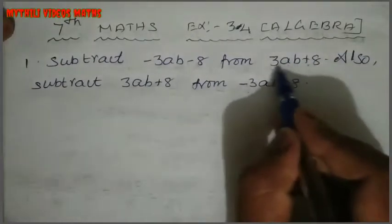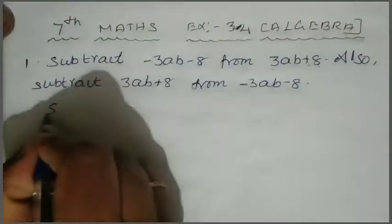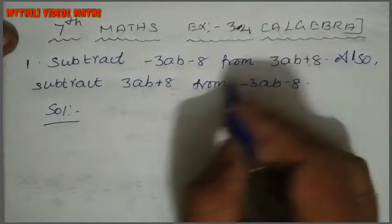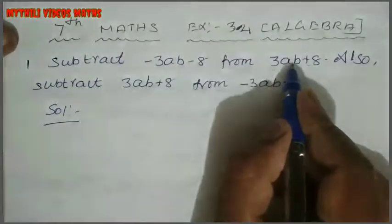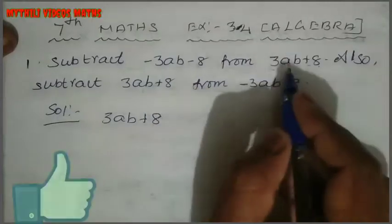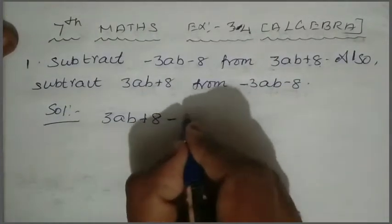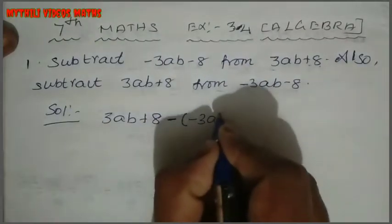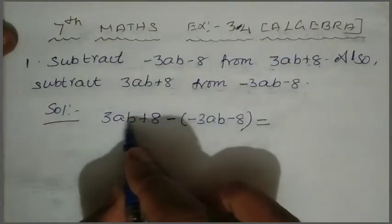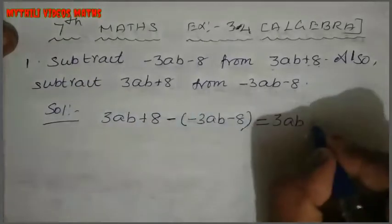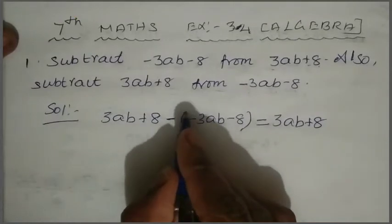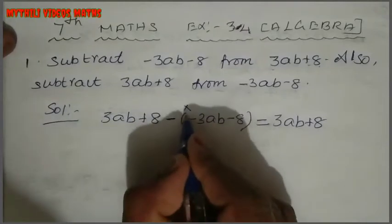So first we have to write the solution. Just write 'subtract.' In the algebraic expression, we write the first expression: 3AB plus 8. Then below it, we subtract minus 3AB minus 8. The bracket here acts as a multiplication symbol, so the first term is written as it is: 3AB plus 8.